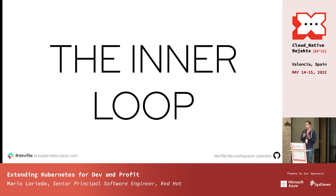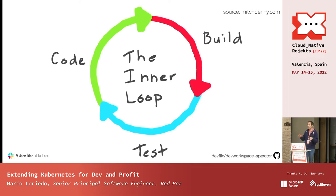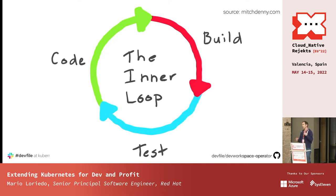Let's introduce the inner loop — the development loop we're used to. We call it the inner loop, and the activities in it are: first, coding; then when you're happy with what you've written, you build the application; then you test it; and you start again until you're happy and commit your code. At that point, there is what we call the outer loop — what happens after that. Today we're going to talk about the inner loop.